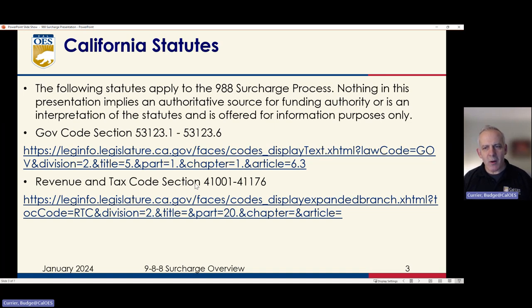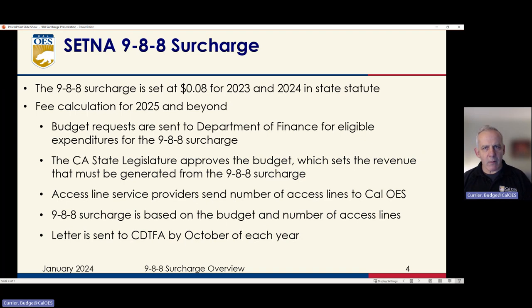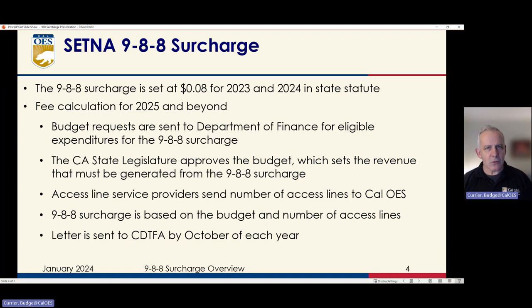With the disclaimer out of the way, I want to walk through the process on how the 988 surcharge is determined. This is all outlined in the revenue and tax code. When the Miles Hall Act was first passed, that set and established the surcharge at $0.08 for the calendar years of 2023 and 2024. In calendar year 2025 and every year after that, there's a process that we have to go through to set the surcharge.